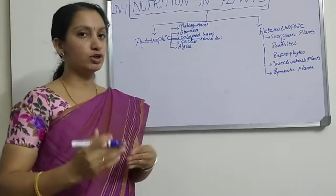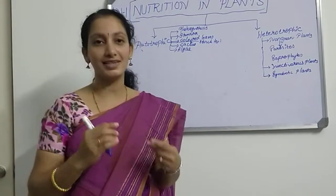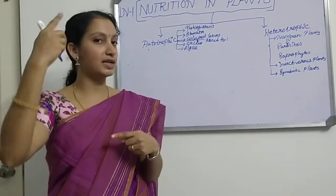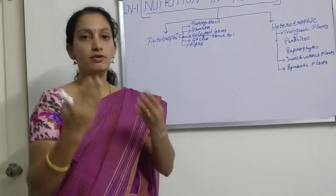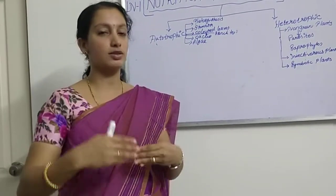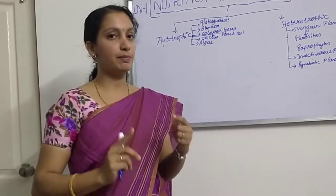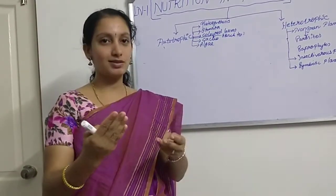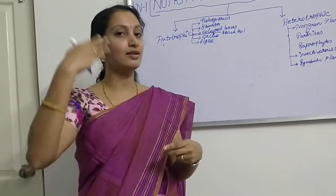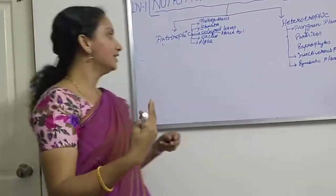During photosynthesis, carbon dioxide is taken inside and oxygen is liberated out. During respiration by the plant, oxygen goes inside and carbon dioxide is liberated out, just like in human beings. Here I will draw the structure of stomata to understand how it looks when seen through a microscope.